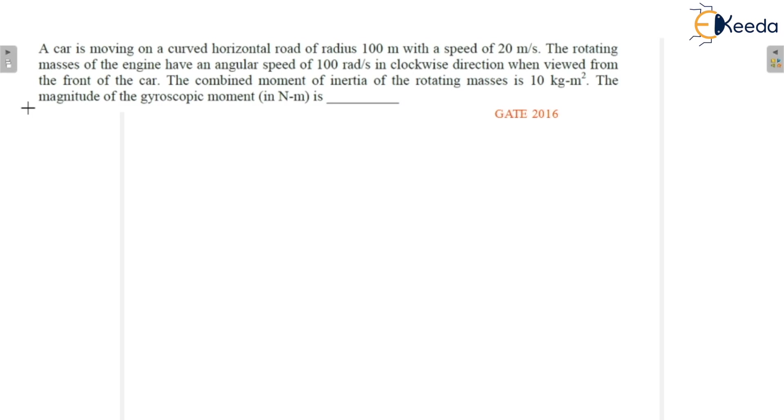A car is moving on a curved horizontal road of radius 100 meters with a speed of 20 meters per second. The radius is 100 meters and the speed is 20 meters per second.